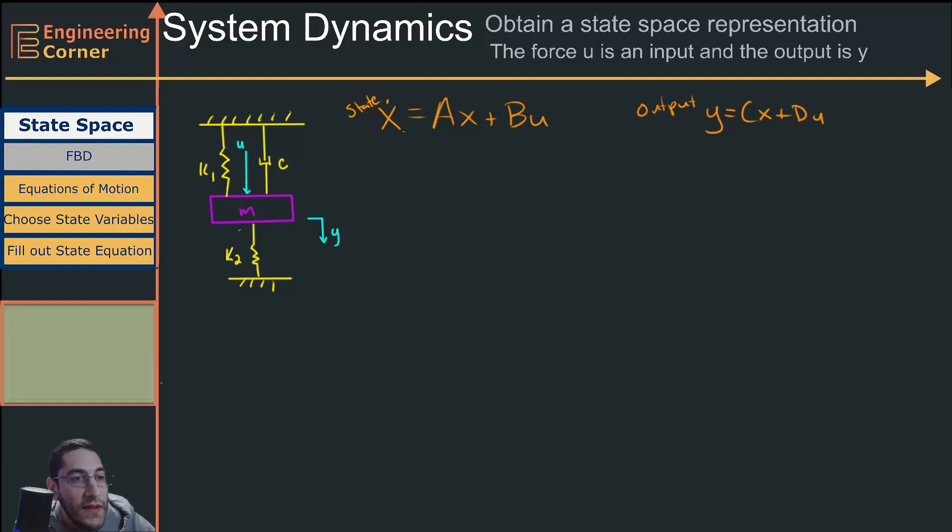Now what are these variables? Well, x right here is going to be my state variables. u is going to be my input vector. This x dot is just the derivative of my state variables. Then we have A, B, C, and D.